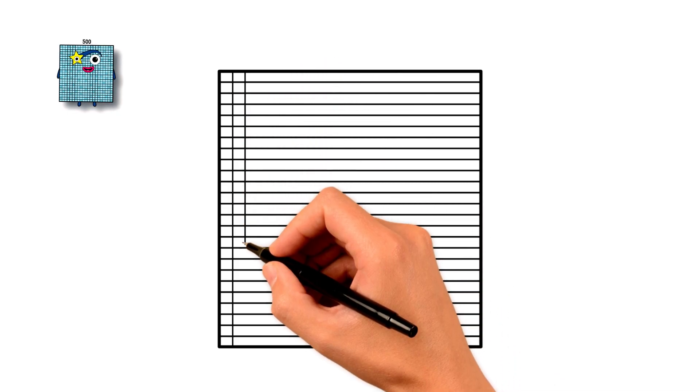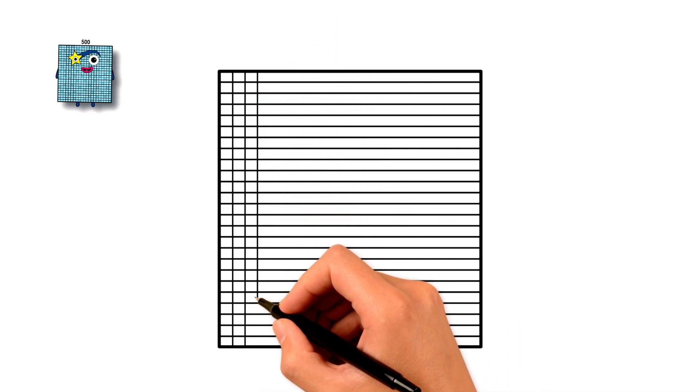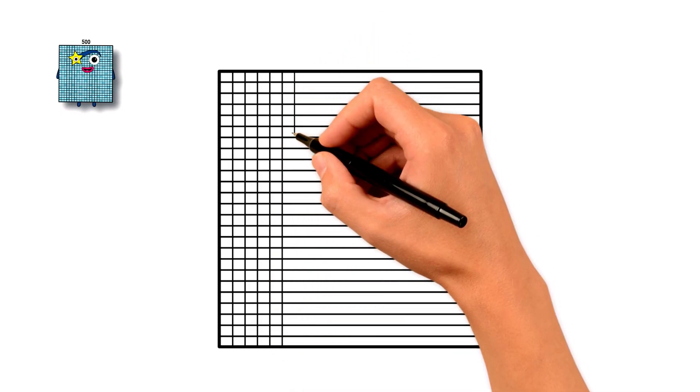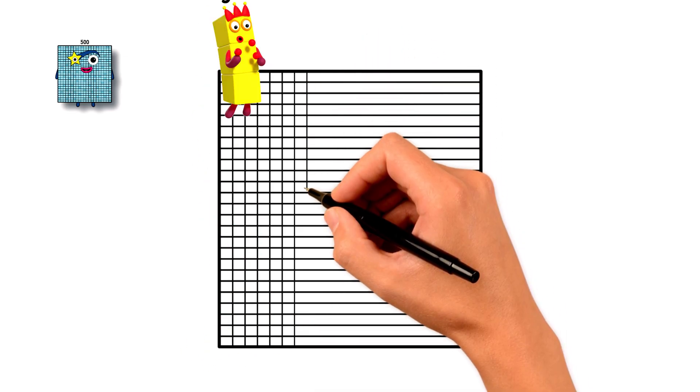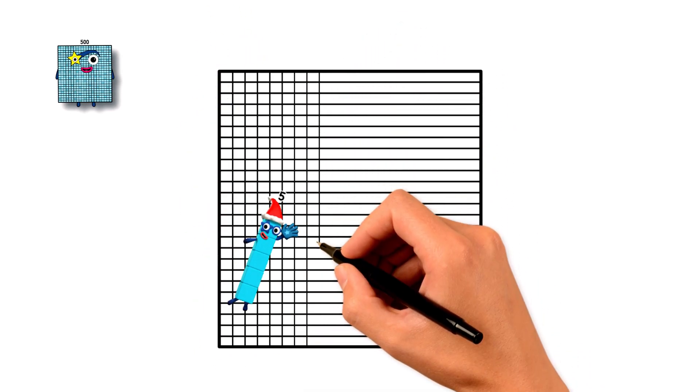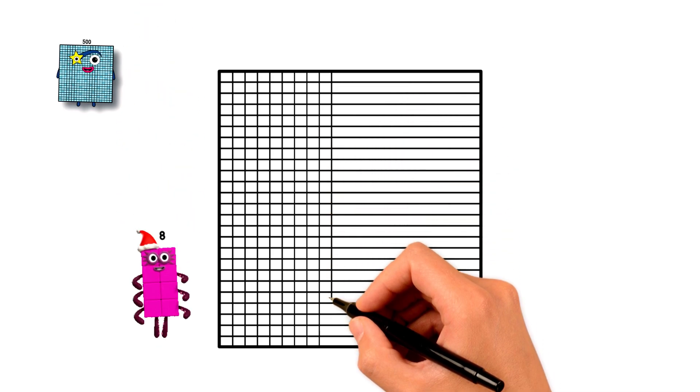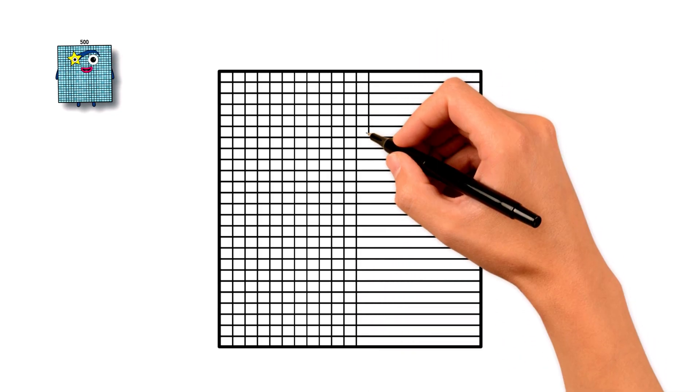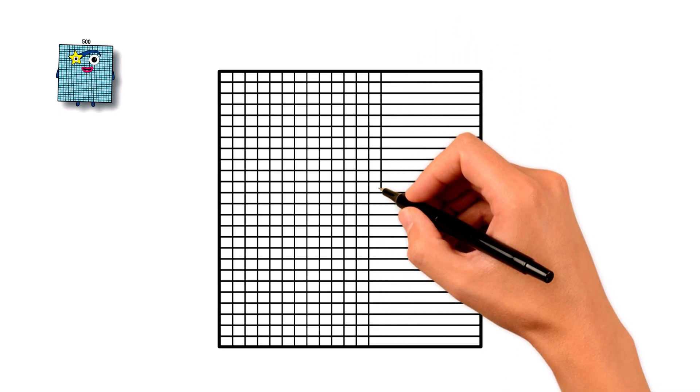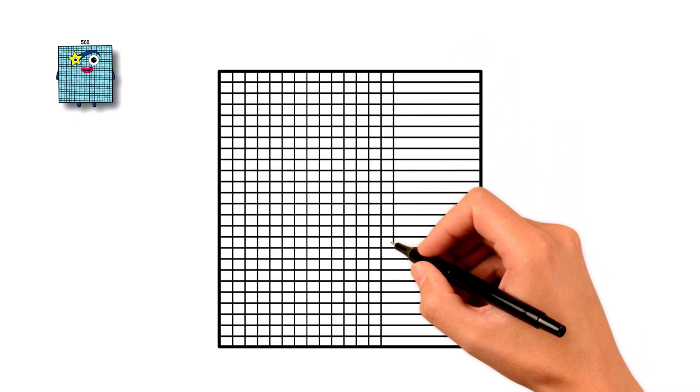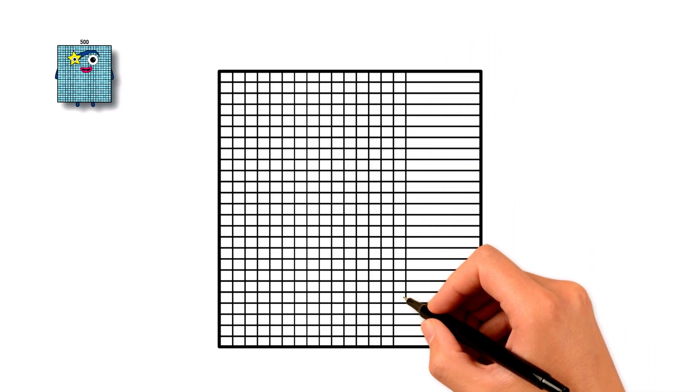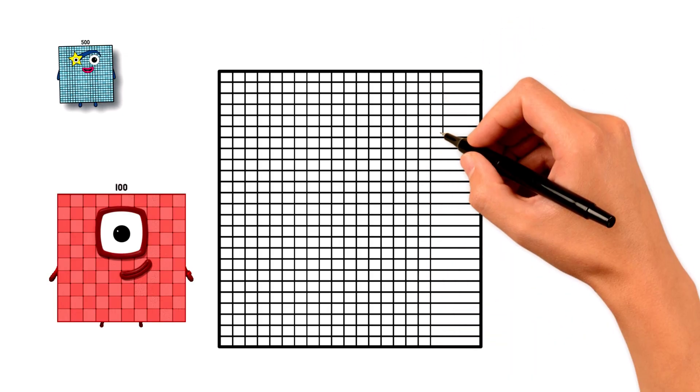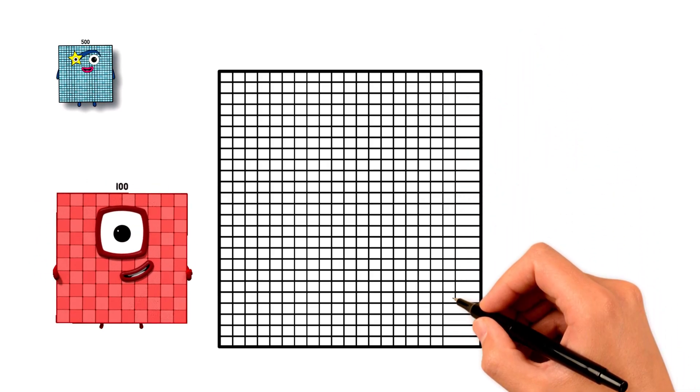Now, let's count all the way up to 20 in a tall vertical line. Imagine each number standing on top of the other, like a tower. One, two, three, four, five, six, seven, eight, nine, ten, eleven, twelve, thirteen, fourteen, fifteen, sixteen, seventeen, eighteen, nineteen, twenty.